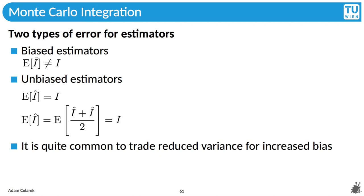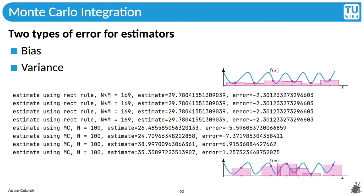In practice, it's quite common to trade variance for increased bias. But we won't go there now. Let's look at an example instead. We have the rectangle rule estimator on top and you see that no matter how often we run it, the result is always the same. Clearly, the variance is zero and the bias is minus 2.301. The Monte Carlo estimator, on the other hand, produces a different result every time. Variance is not zero. We could estimate it by running the estimator many times and using the equations for variance. The bias is zero, as we have proved before.